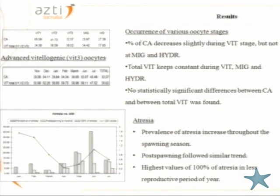The pattern of oocyte development was further analyzed by observing the occurrence of various oocyte stages. We checked the percentage of cortical alveoli and total vitellogenic oocytes in different ovary maturation classes. The percentage of cortical alveoli decreased slightly during the vitellogenic stage but remained constant during migration and hydration. We also found no statistically significant differences between the percentage of cortical alveoli and total vitellogenic oocytes across different months in advanced vitellogenic ovaries.